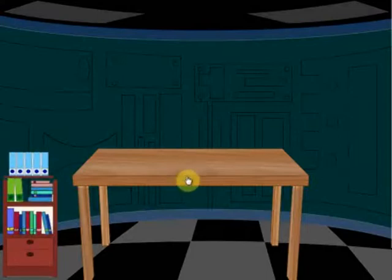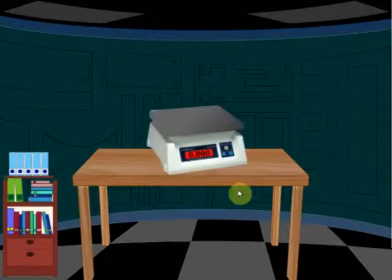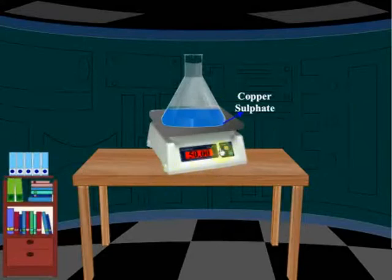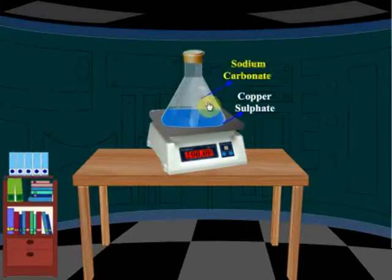Let us verify this by conducting an experiment in the laboratory — you can actually conduct this experiment. Take a weighing balance and place it on a table. Now on the weighing balance, place a beaker that has 50 grams of copper sulphate. The weighing balance will now read 50 grams. Now carefully insert a test tube that has sodium carbonate solution and put that test tube inside the beaker.